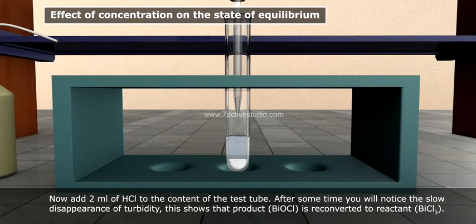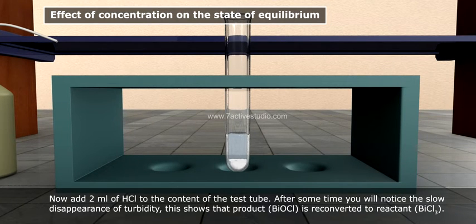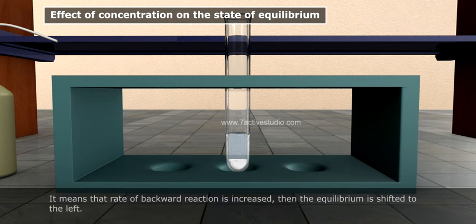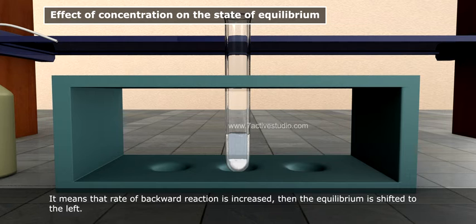Now add 2 ml of HCl to the content of the test tube. After some time, you will notice the slow disappearance of turbidity. This shows that product BiOCl is reconverted to reactant BiCl3. It means that rate of backward reaction is increased, then the equilibrium is shifted to the left.